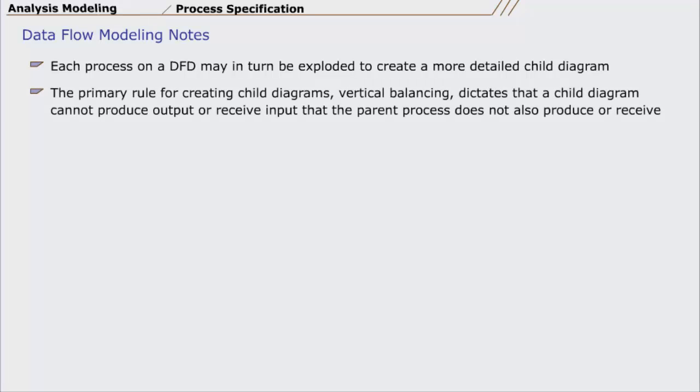The primary rule for creating child diagrams, vertical balancing, dictates that a child diagram cannot produce output or receive input that the parent process does not also produce or receive.